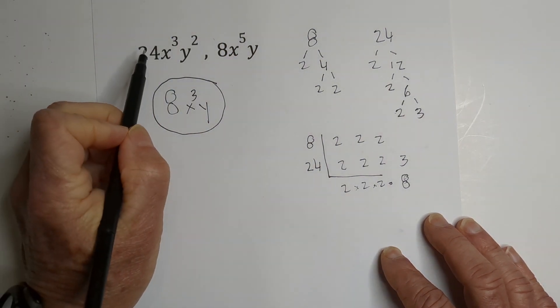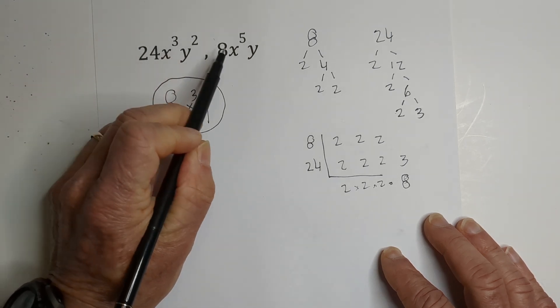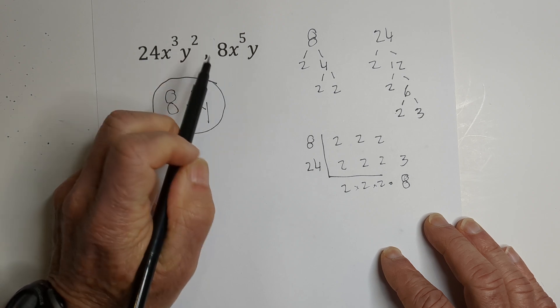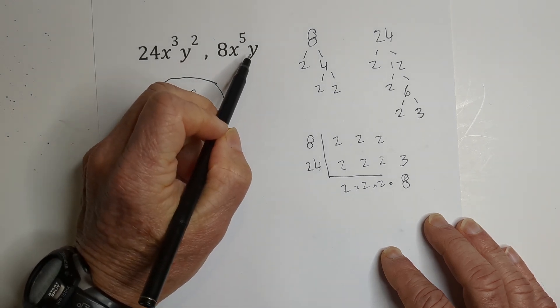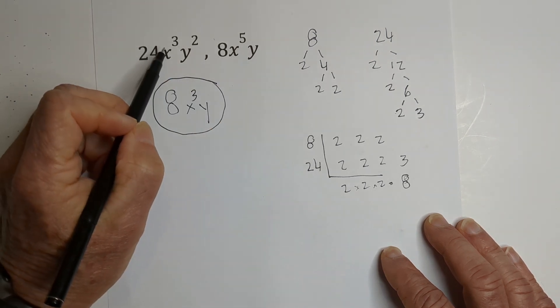In summary, we found the greatest common factor of the coefficients. We looked for common variables, x, x, y, y, and then we went with the lowest exponent, which is 1 and 3.